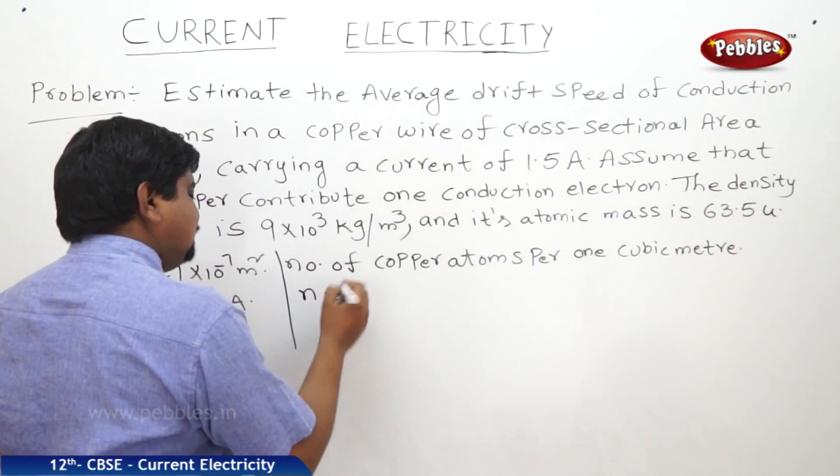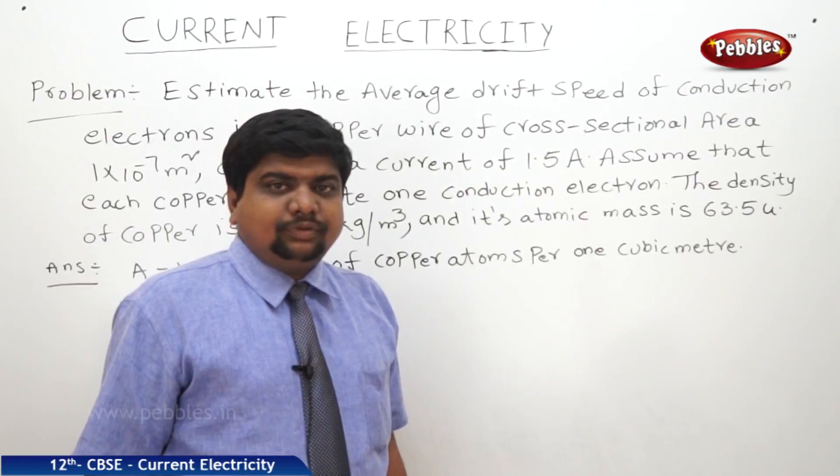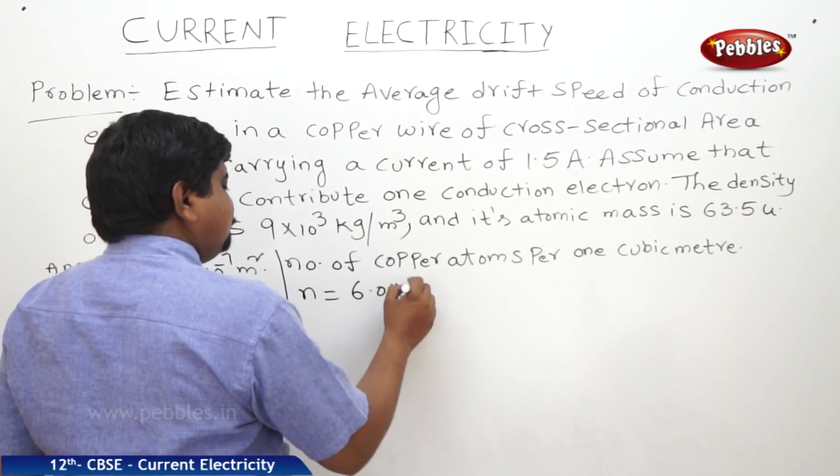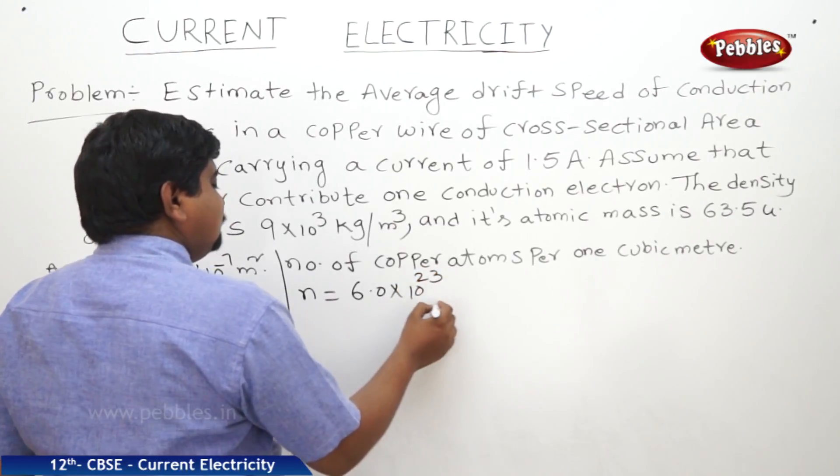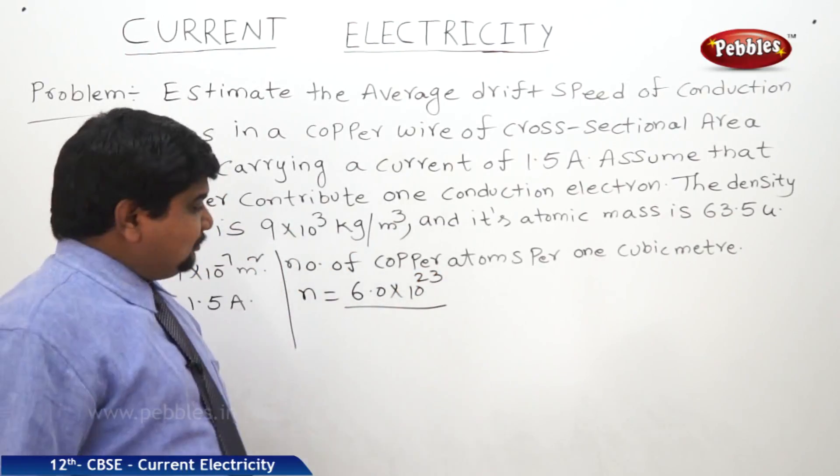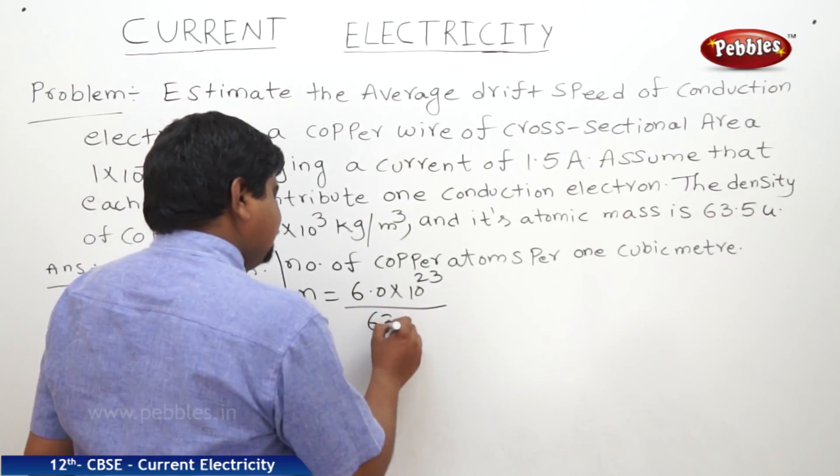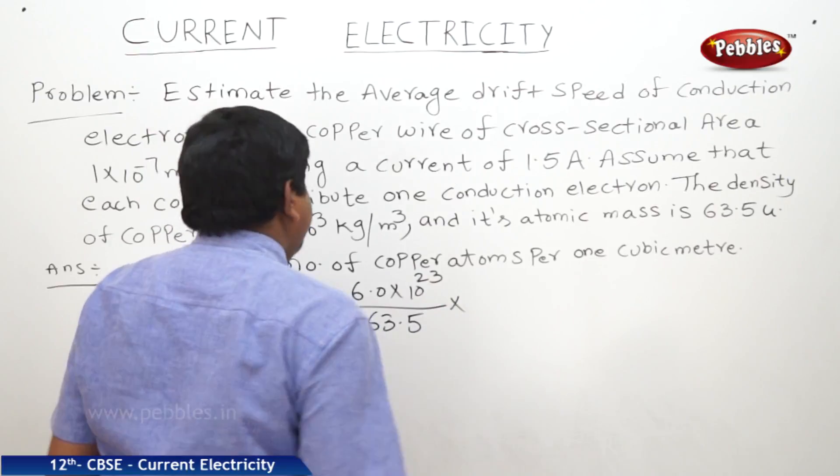Therefore, n is equal to 6.0 into 10 to the power of 23 because in 63.5 grams, these many number of atoms will be there. That is nothing but the Avogadro number. Whole divided by 63.5 into,